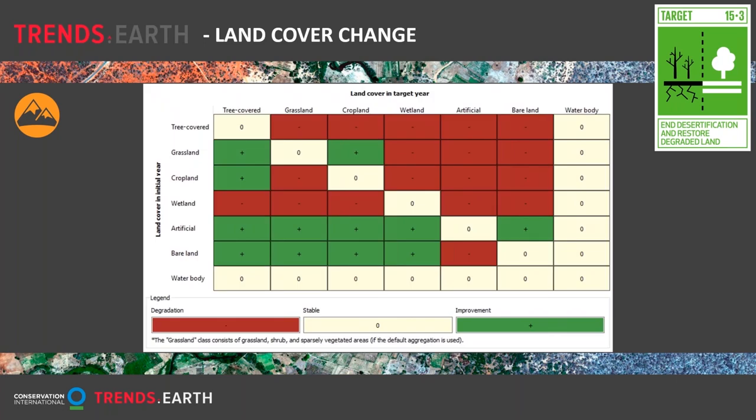The land cover transition matrix shows, for each combination of initial and final land cover class, whether we consider the transition to be degradation in red, stable in yellow, or improvement in green. For example, tree covered to grassland is considered degradation, while grassland to tree covered is considered improvement. This can be adjusted depending on the particular area; if woody encroachment is a concern, a grassland to tree cover transition might be considered degradation rather than improvement. You'll see an example of this in the tool and how to modify the matrix for a given area.